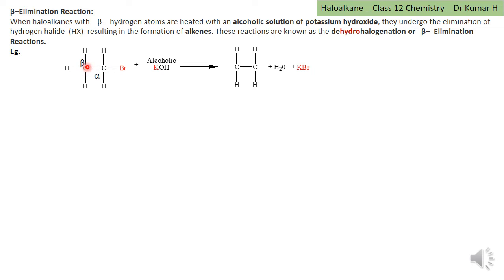When the alpha carbon attracts electrons, the beta carbon will give its electrons to the alpha carbon. After giving, it doesn't keep quiet. The alpha carbon has taken away electrons from the beta carbon, and in turn, this beta carbon takes away electrons from the hydrogens which are present on it.